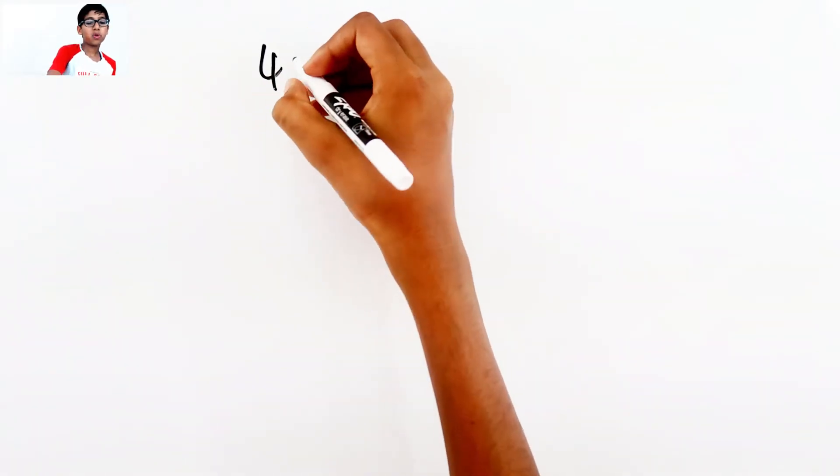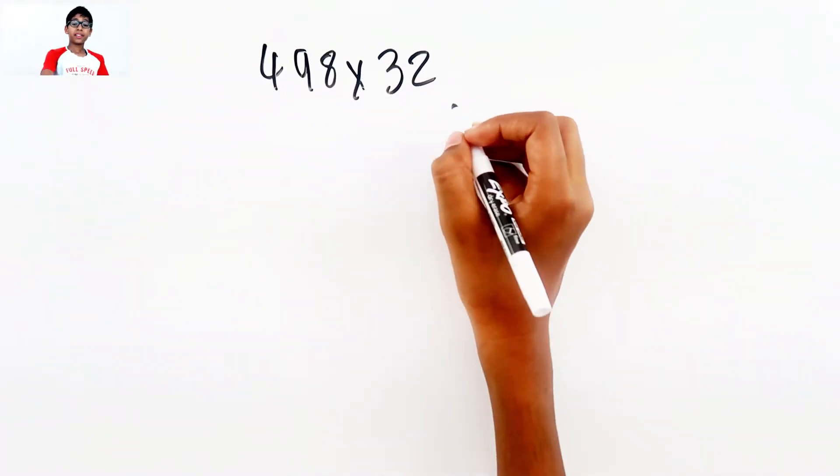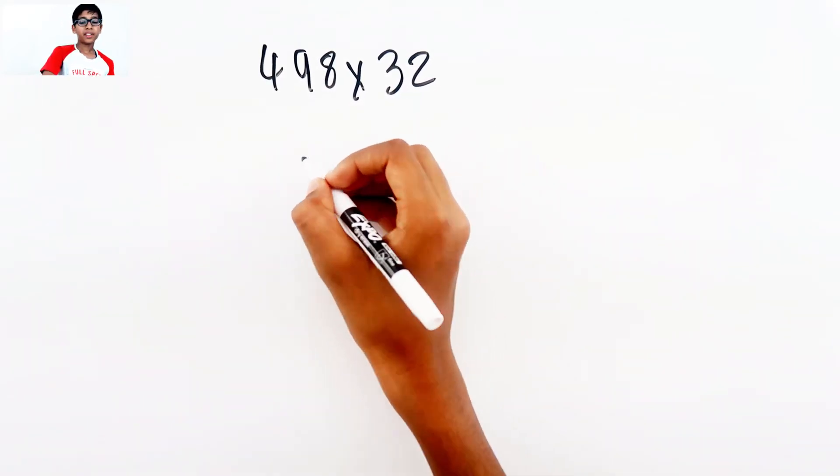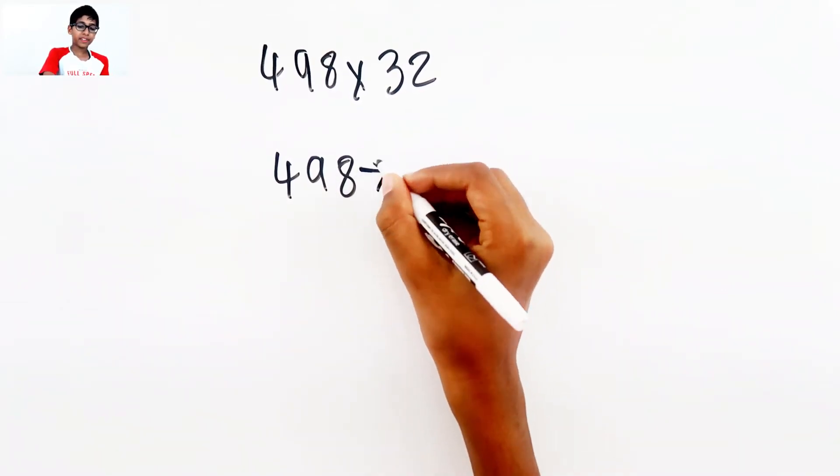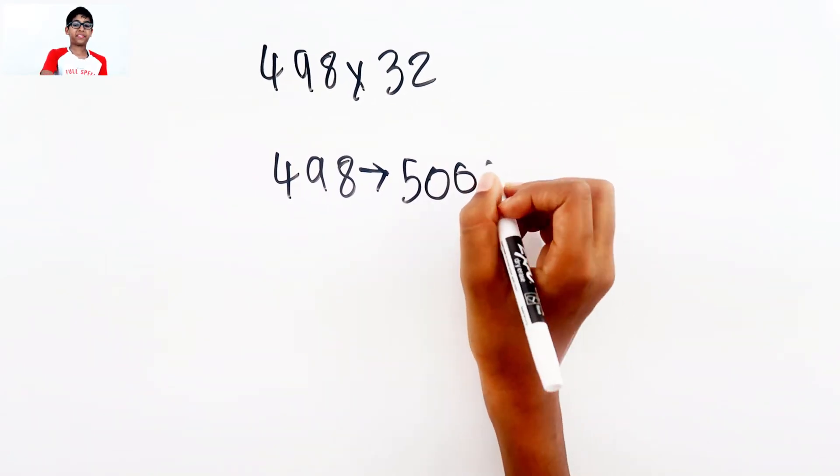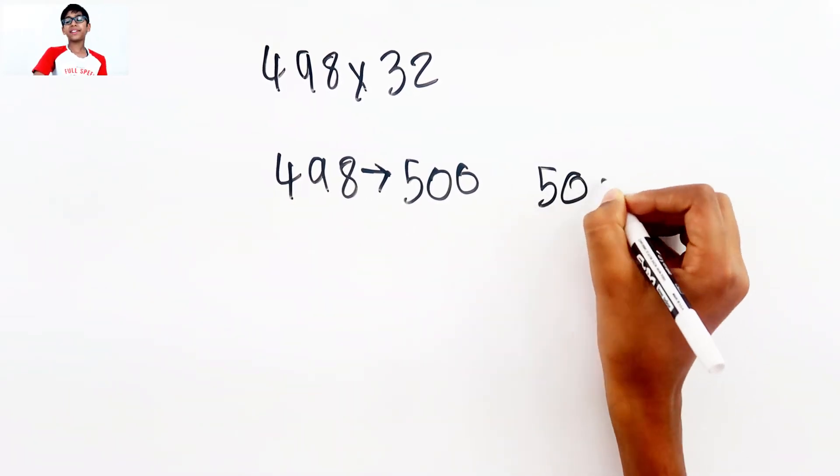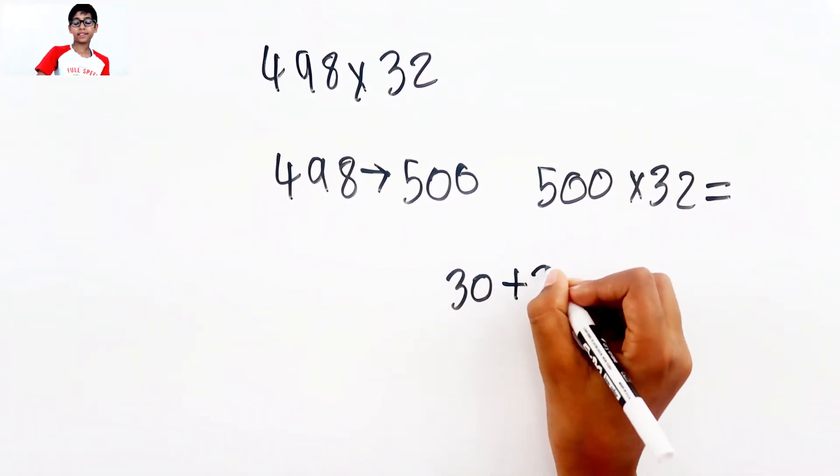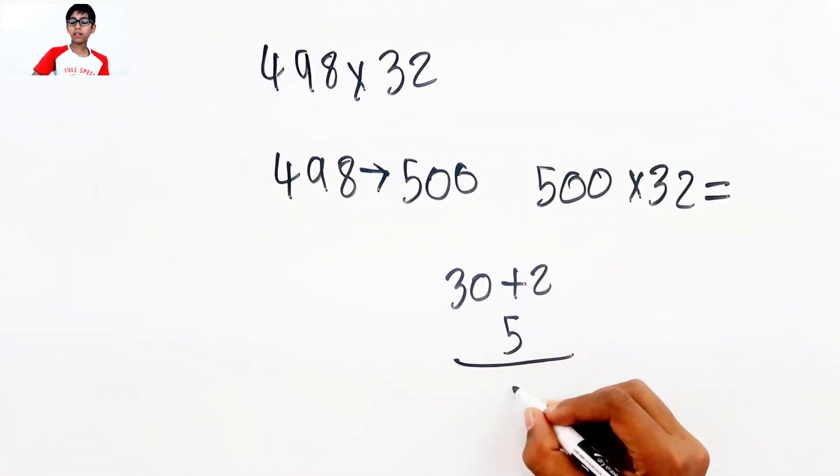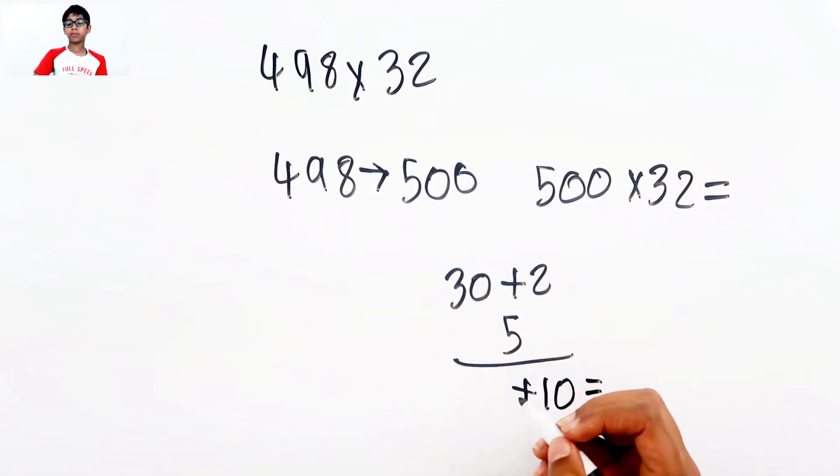So the next problem is going to be a bigger number. 498 times 32. Let's turn the 498 into 500. So we need to do 500 times 32. So 30 plus 2, and then let's just put the 5 down there.